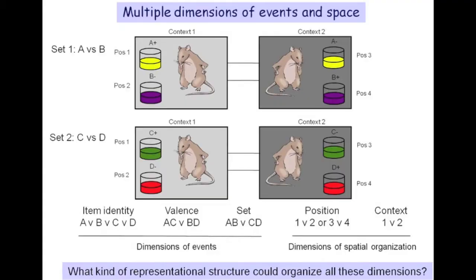Once rats learn the first item set, A and B, they then start to learn about a new set of items within the same space. Now trials can be related in several different dimensions of the animal's experience. Trials can be related by having the same or different items, or having the same reward potential. The trials can also be related by occurring within the same positions, or within the same or different contexts.